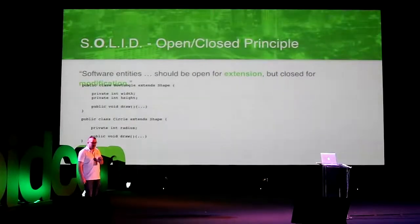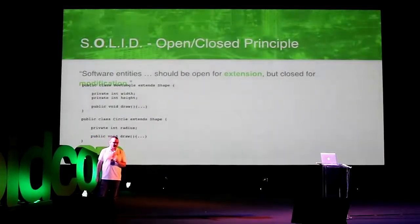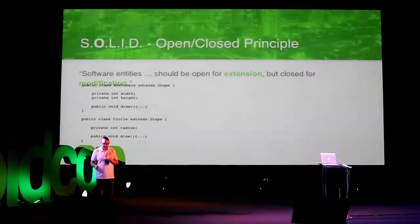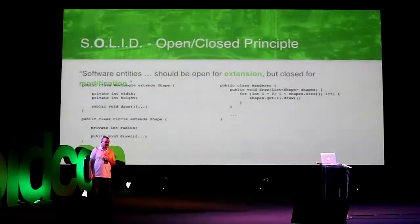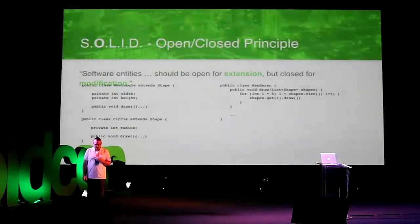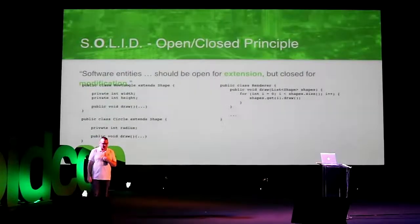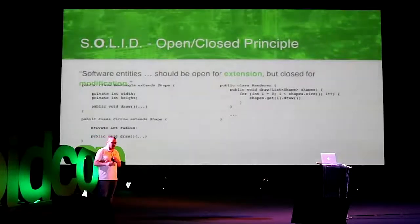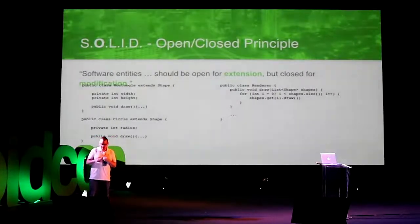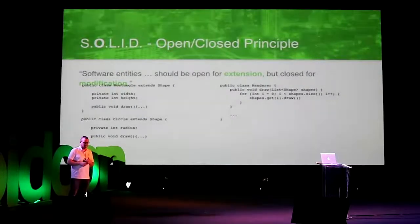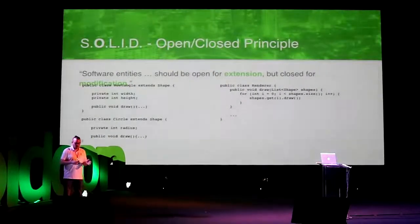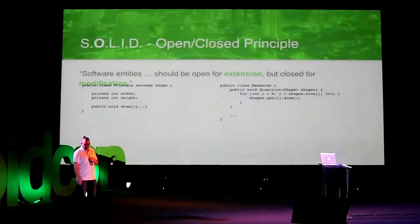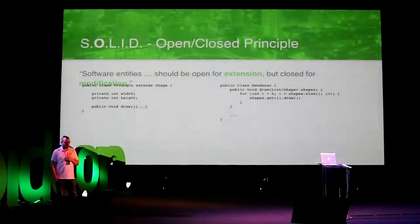If instead I make my shapes a little bit smarter — like letting them take care of their own rendering — then my renderer would look a lot less messy. And if I want to extend this, I can extend it by adding a new class without having to modify anything. This is the Open-Closed Principle. So if I want to extend with a triangle, I create my triangle class and I don't have to touch the renderer at all.